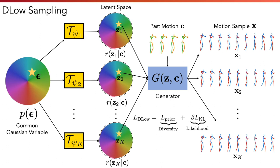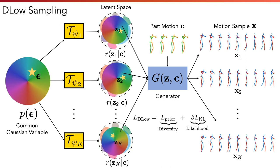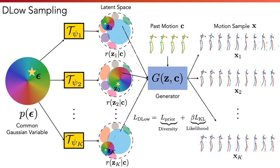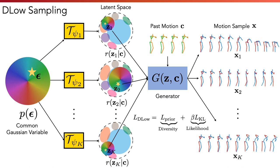By optimizing the transformations with this DLow objective, each latent code attends to a different area in the latent space and results in more diverse motion samples.